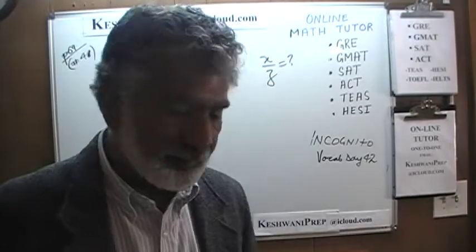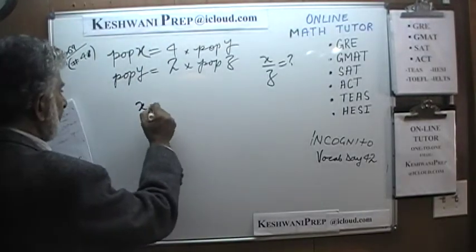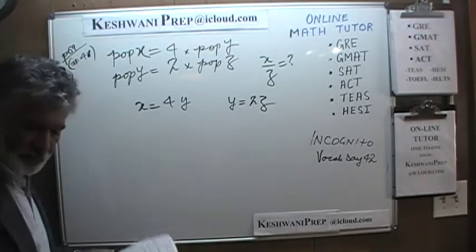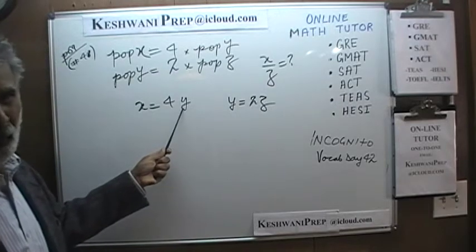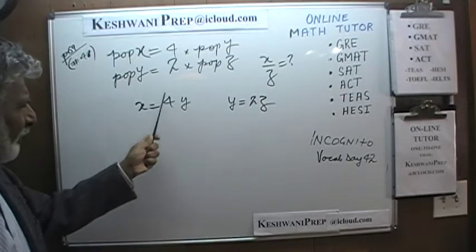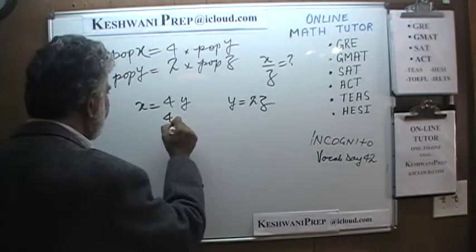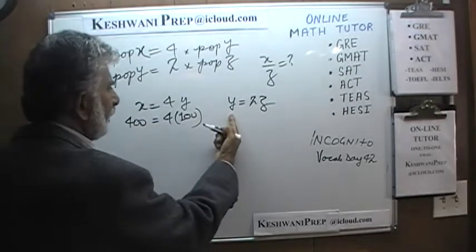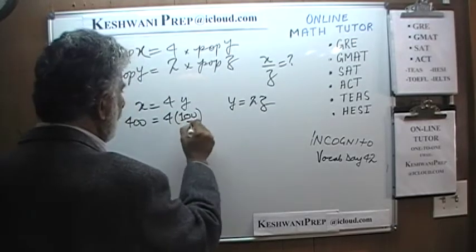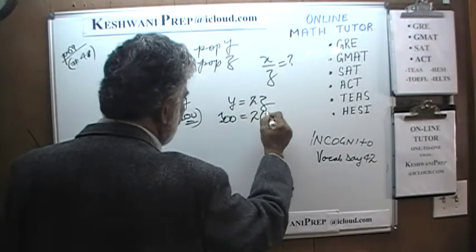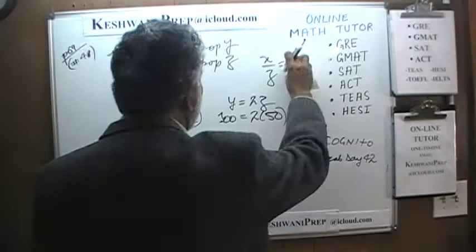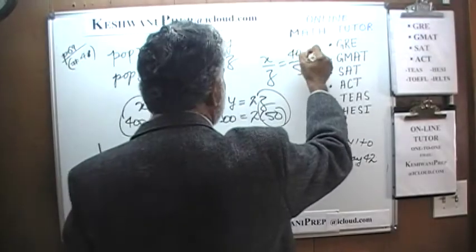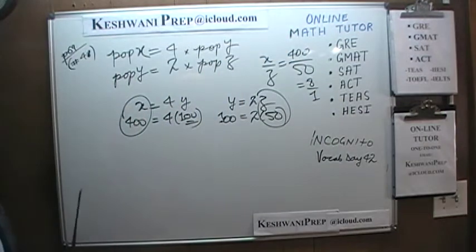It will be faster simply to plug in some numbers. Population of X is 4 times Y, and population of Y is 2 times Z. Let's plug in 100 for Y — just don't plug in 1 or 0. If Y is 100, then X would be 400. And since Y is 2 times Z, Z must be 50. The ratio of X to Z is 400 to 50, which is 8 to 1.